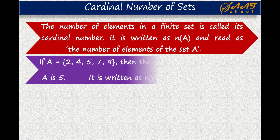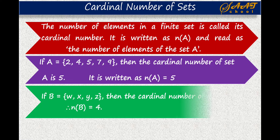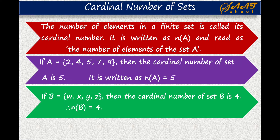Here is an example. Set A has 5 elements: {2, 4, 5, 7, 9}. So the cardinal number of set A is 5, since set A has 5 elements. Similarly, set B is {W, X, Y, Z}. Here B has 4 elements, so the cardinal number of B is 4 — that is, N(B) = 4. So simply, the cardinal number of any set is the number of elements present in that set.